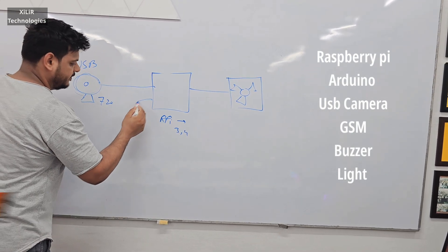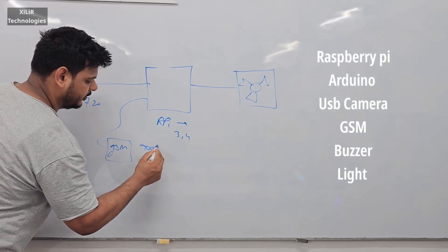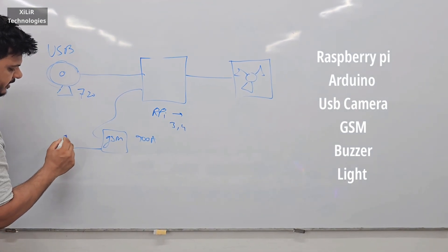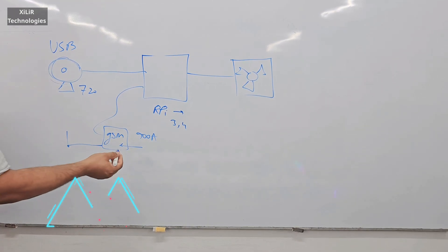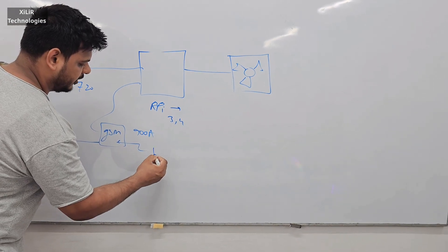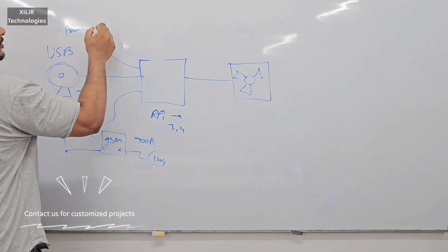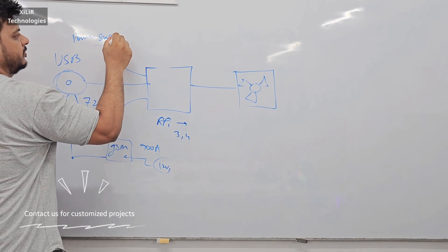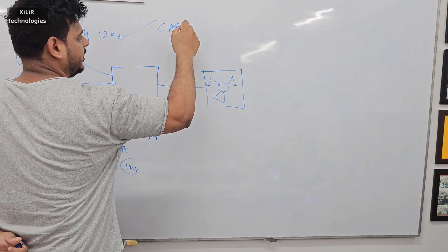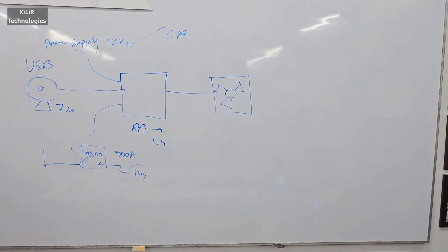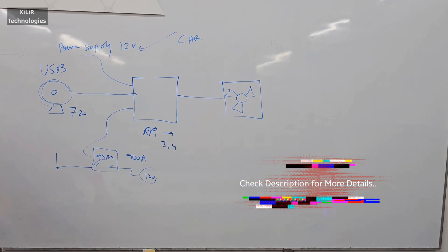Then we have the GSM module — 900K — I am using because it gives the best performance. You can power it through an adapter. A 12-volt supply from a common power supply. The 12-volt power supply we can also get from a car. Right now I am showing through battery; in further practicals I will show you in the car.